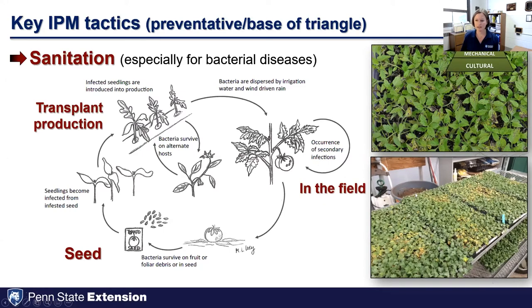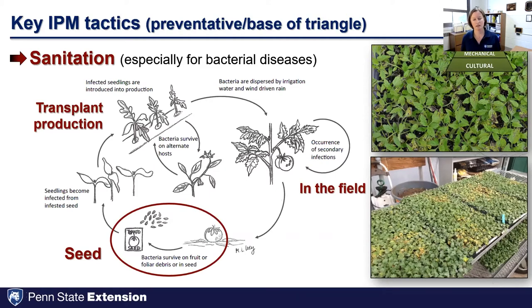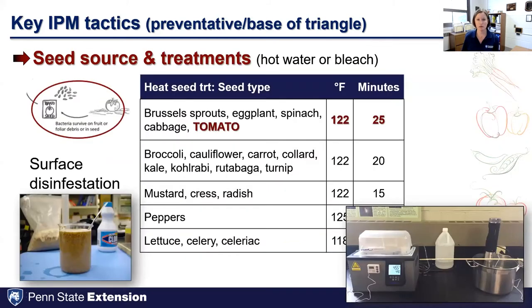Here are kale transplants with black rot and tomatoes with bacterial spot. In both cases, there's no chance of planting these out into the field and being able to yield a crop — it's best just to discard these plants and start fresh. Many bacterial pathogens can be associated with the seed. Seed companies aren't trying to sell seed with bacterial pathogens, but it's a needle in a haystack — one seed in 10,000 can cause significant losses in the field. As growers, we can surface disinfest seed, and there are hot water seed treatments to reduce potential load of bacteria associated with the seed, though specific temperatures and time durations vary by seed type to avoid issues with seed vigor and germination.